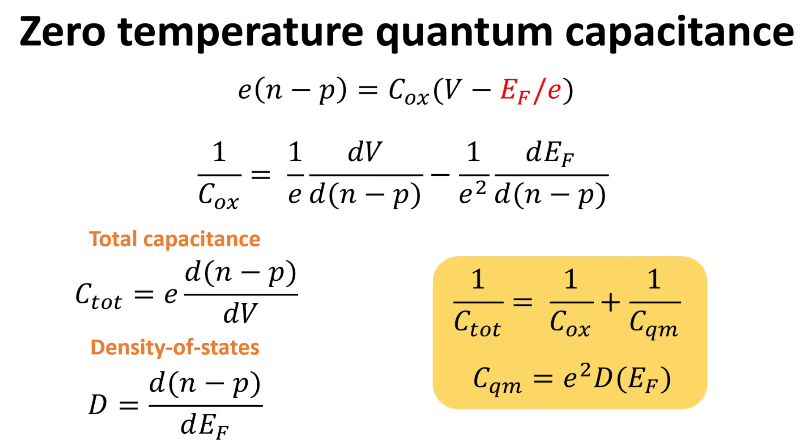We can therefore express the total capacitance of the capacitor stack as series combination of two capacitors, the oxide capacitance and the quantum capacitance. The quantum capacitance is defined as the electronic charge squared times the electronic density of states D.